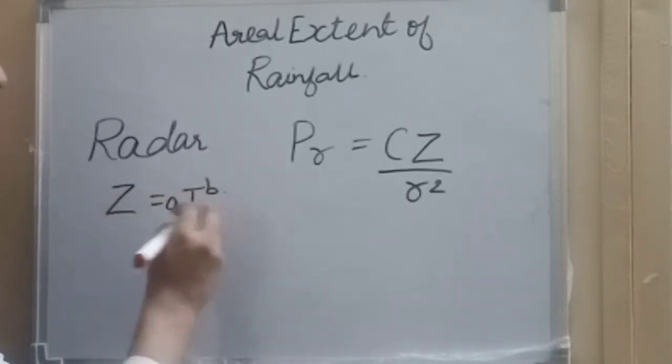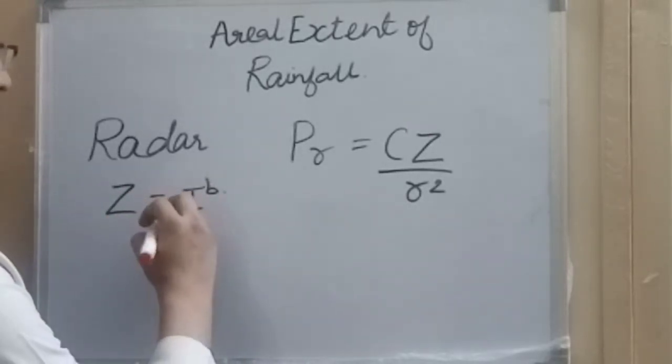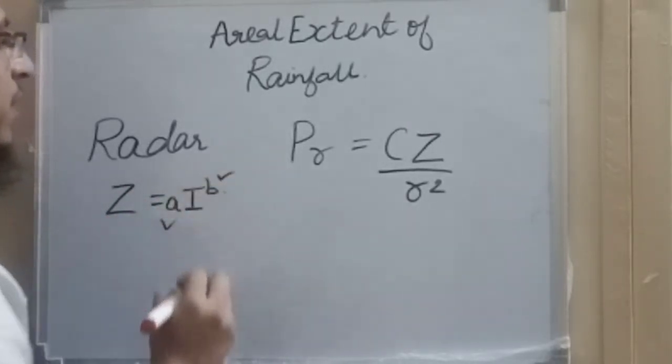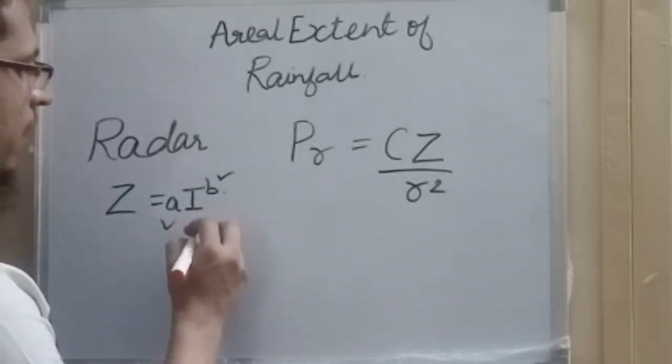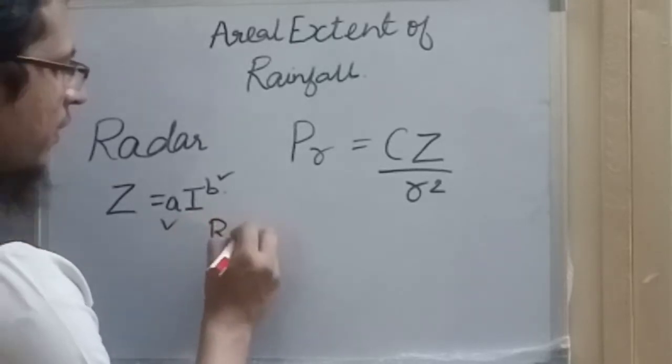Before using the radar, these constants a and b have to be calibrated. To calibrate this, we require a recording rain gauge.